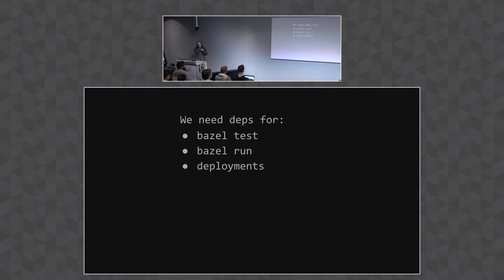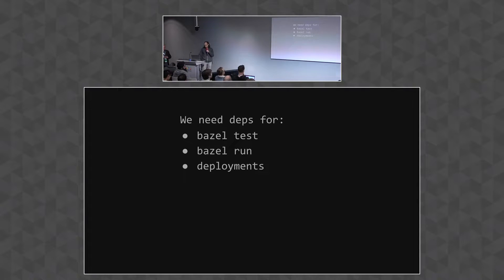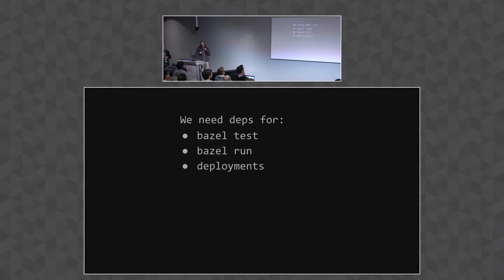When we Bazel test or Bazel run some target, that target's third-party dependencies have to already be installed. Not only that, but the dependencies of every other target in its transitive closure also have to be installed, and those same dependencies have to be installed in production when the application is deployed.